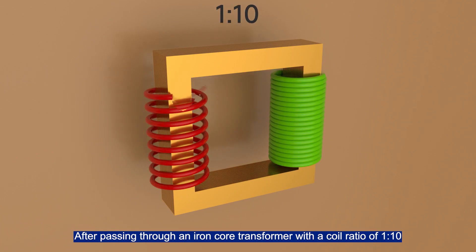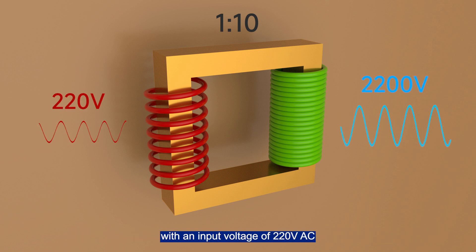After passing through an iron core transformer with a coil ratio of 1 to 10, the output is 2200V AC.